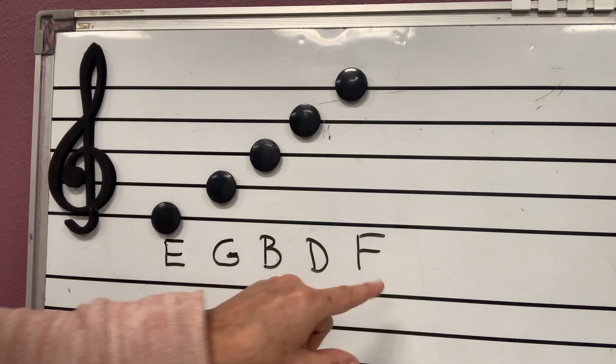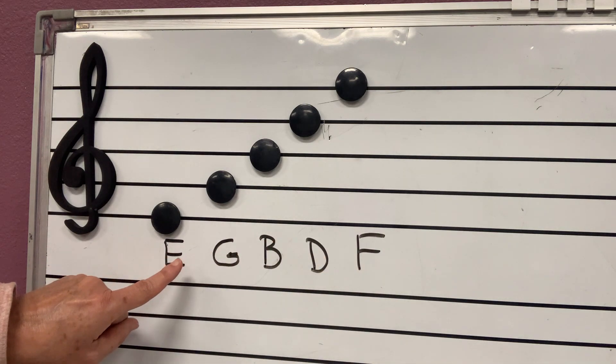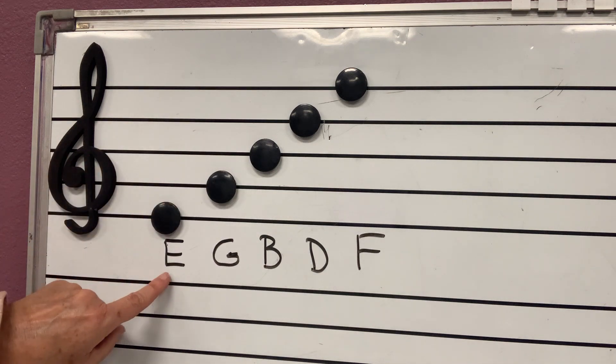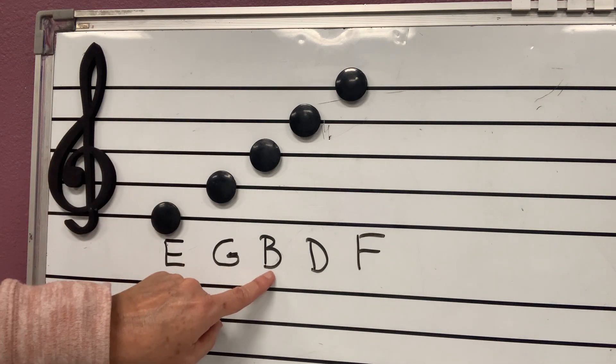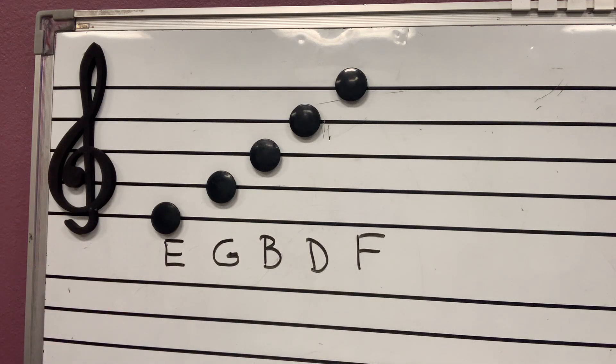Do you know what's fudge? Fudge is that chocolatey, it's not a cake. It's kind of like a chewy thing with chocolate. It's called fudge. So, this is what we will say for the lines. Every girl bakes delicious fudge. That's silly, but say it with me.